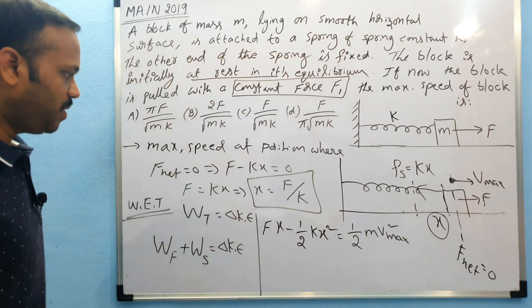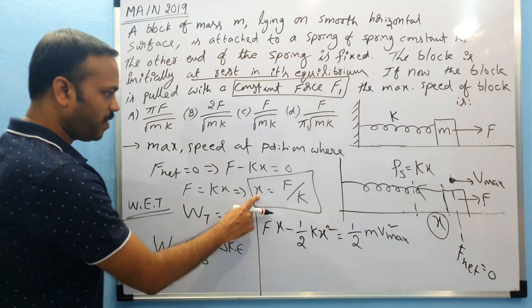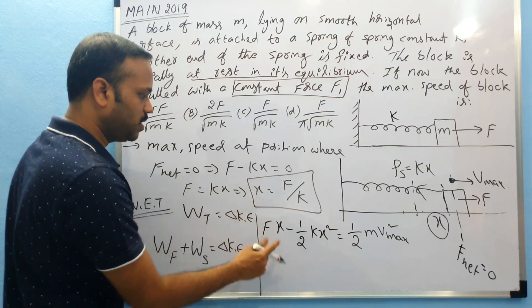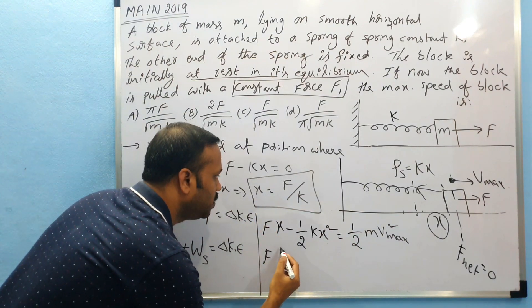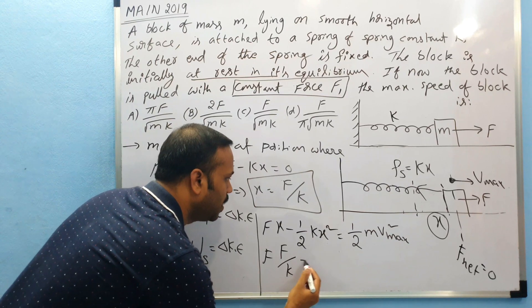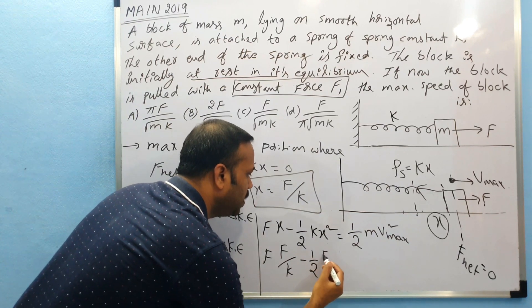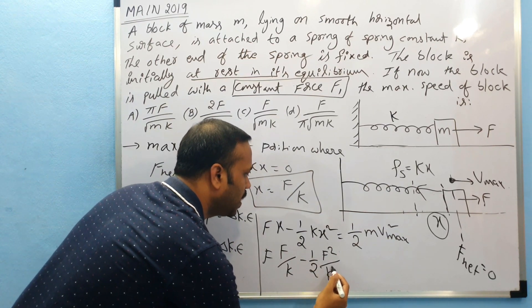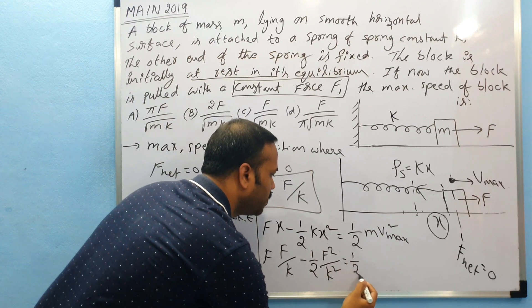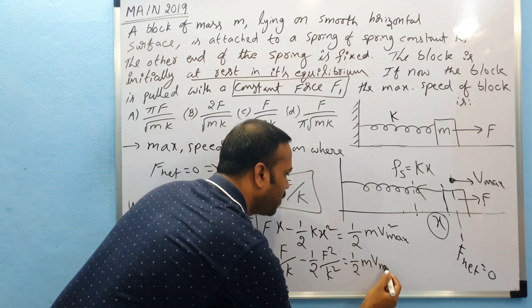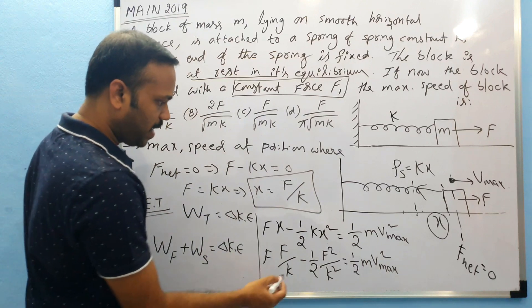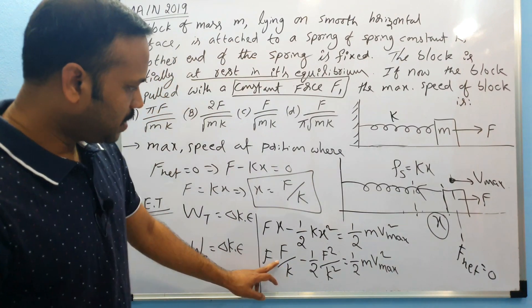Half m v max squared. So in place of x, I can substitute F by k, I already calculated. So I substitute that F into F by k minus half F squared by k squared is equal to half m v max squared.